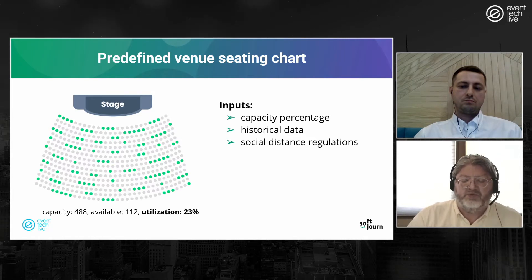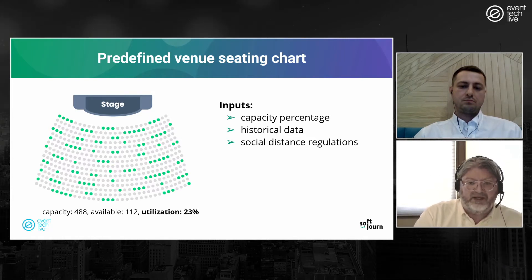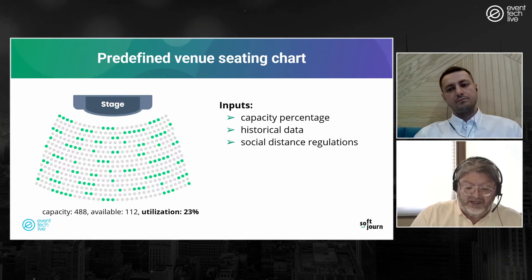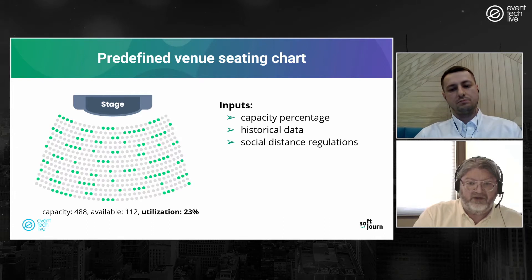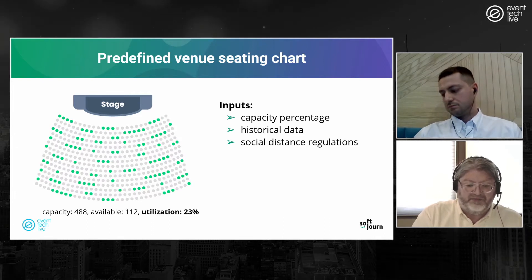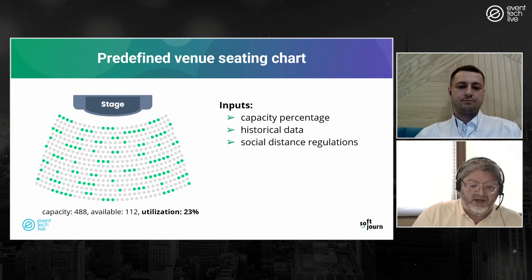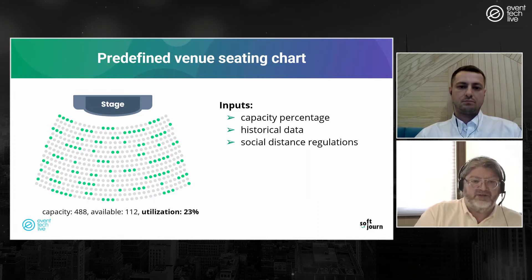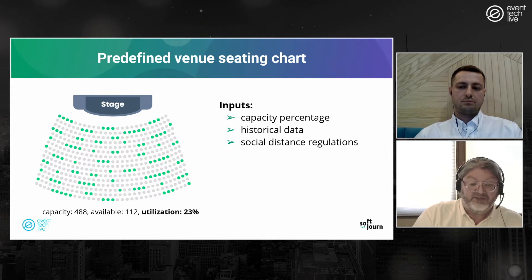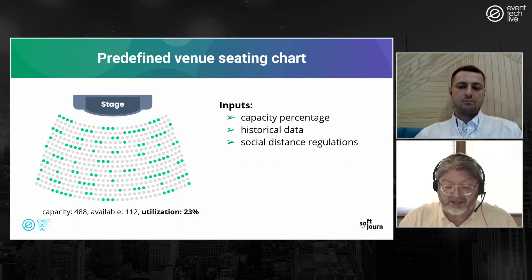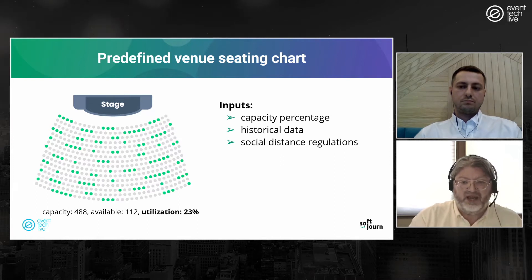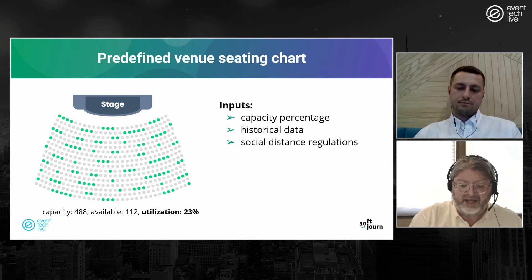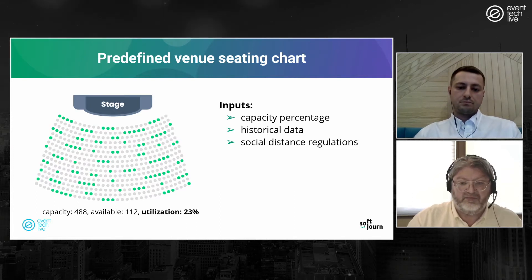Inputs to this process include capacity — what percentage you're allowed to fill — and historical data used to define groupings. Different events, shows, and sporting events have different common ticket purchase patterns, whether twos, fours, or other group sizes. How far apart seats need to be also depends on local regulations.